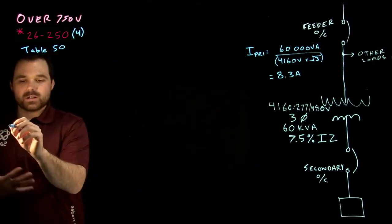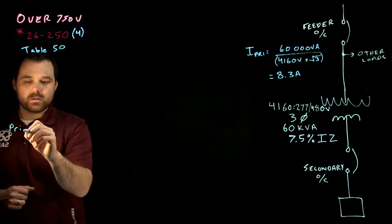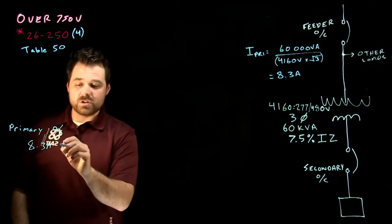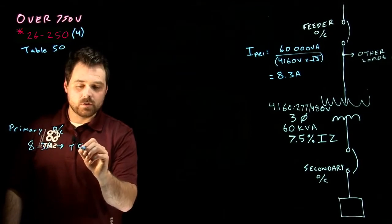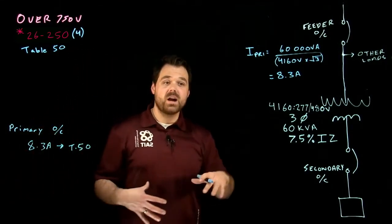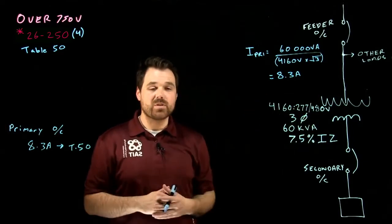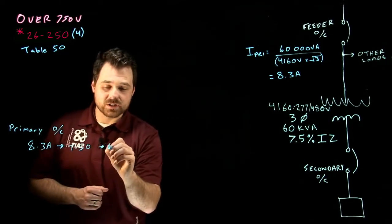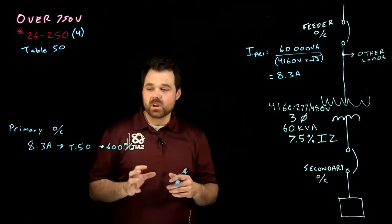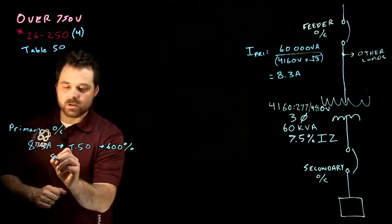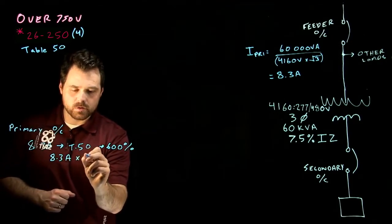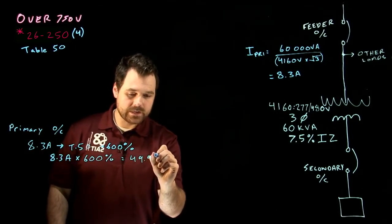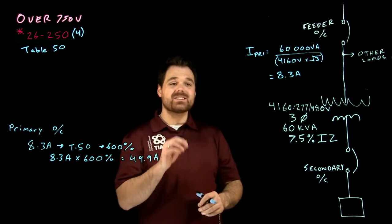What we want to do is take this 8.3 amps. This would be our primary OC. We're going to take 8.3 amps to table 50. Table 50 tells us that in that voltage range with that percent IZ range, 750 or not more than 750, we are actually going to use a 600% multiplier for that. So we go 8.3 times 600%, which is going to give us 49.9 amps. Now, we cannot exceed that rating.